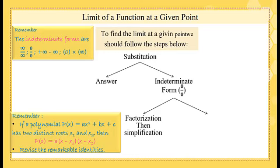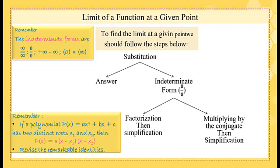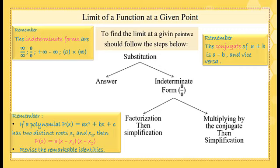The second way: by multiplying by the conjugate, then simplify. The conjugate of a plus b is a minus b, and vice versa.